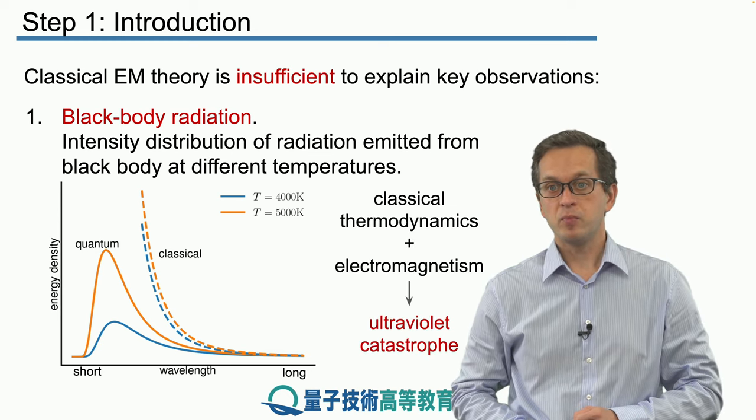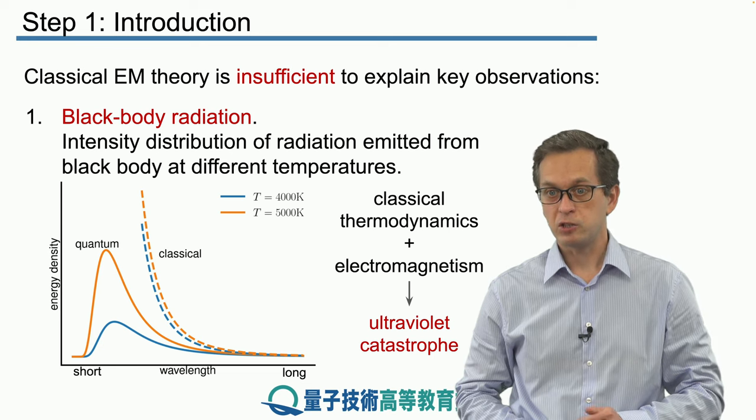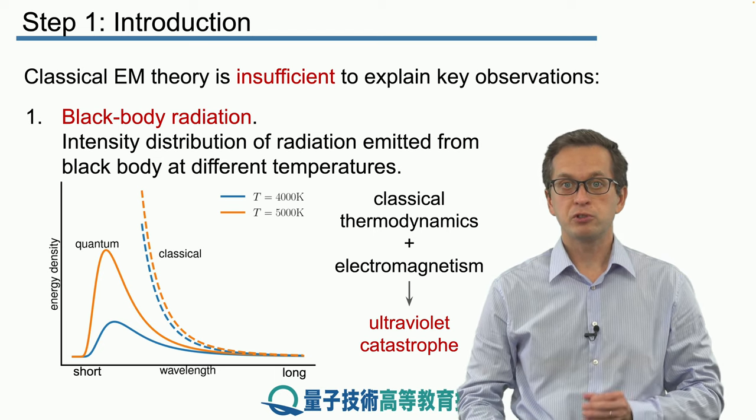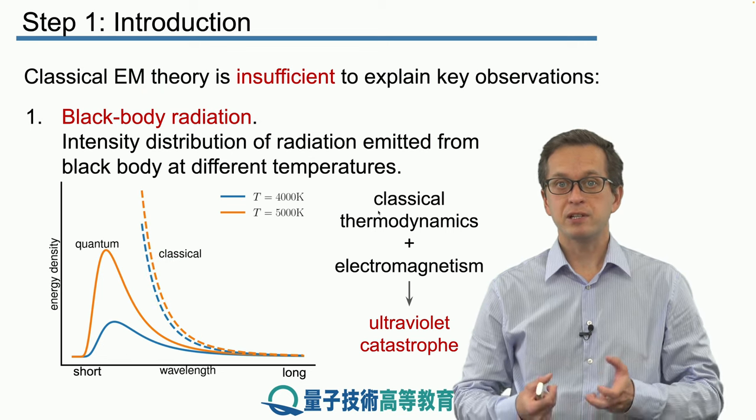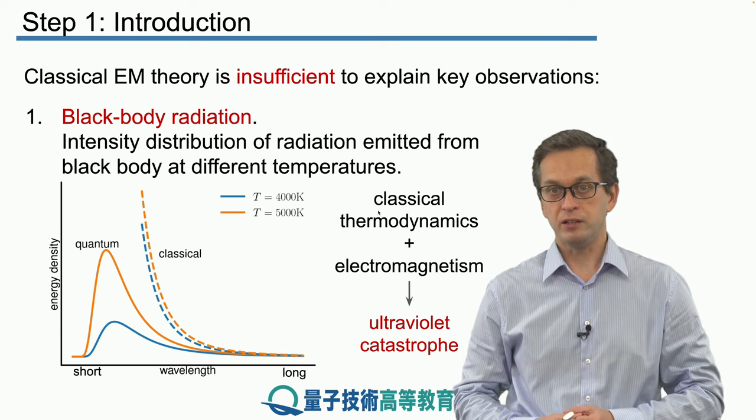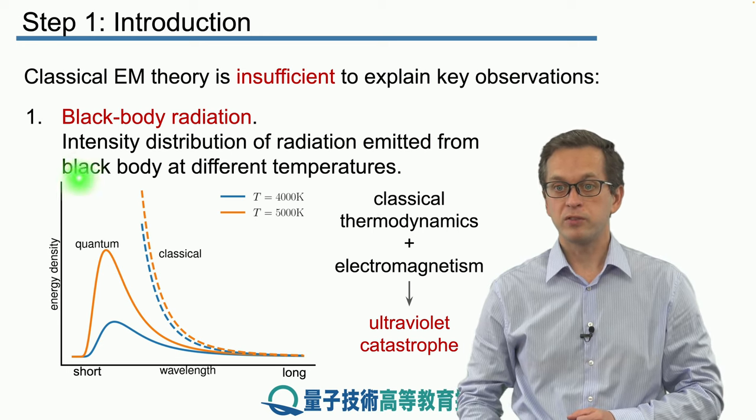And when scientists combined classical thermodynamics with electromagnetism, they found out that in fact the distribution should diverge. In other words, it should do something like this. And this was clearly unphysical. There wasn't infinite energy coming out of radiating objects. So something was wrong and they called this phenomenon the ultraviolet catastrophe.